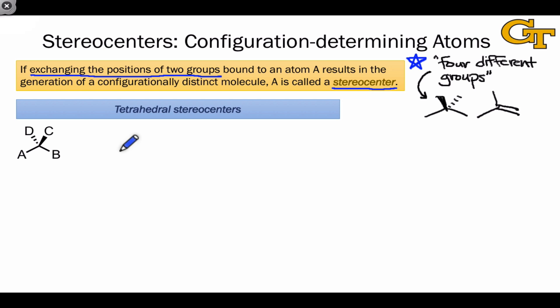As we just mentioned, tetrahedral stereocenters involve four different groups bound to a tetrahedral carbon or a situation where exchanging the positions of two groups at the center leads to a stereoisomer. The simplest case, though, is four different groups bound to tetrahedral carbon.